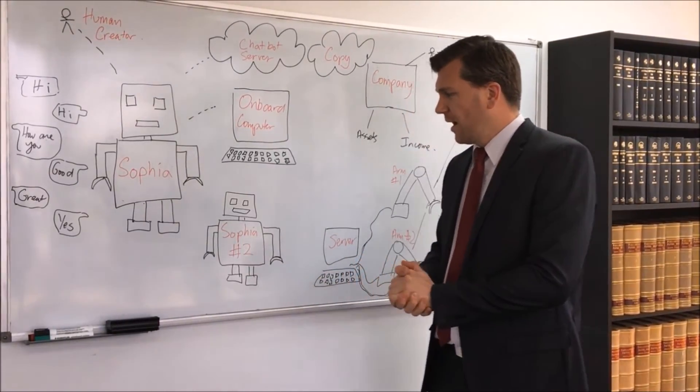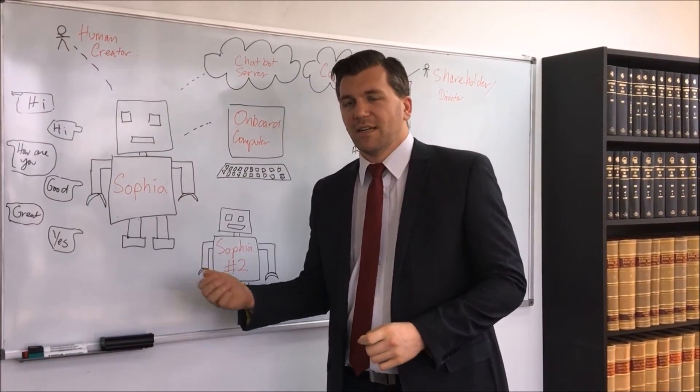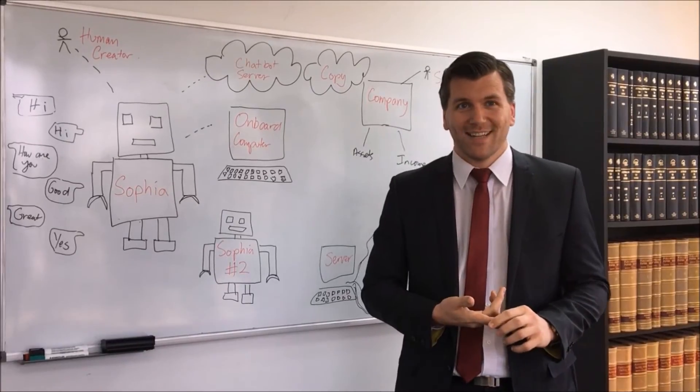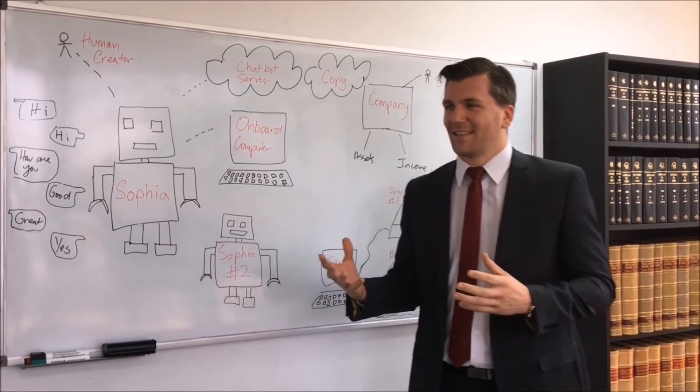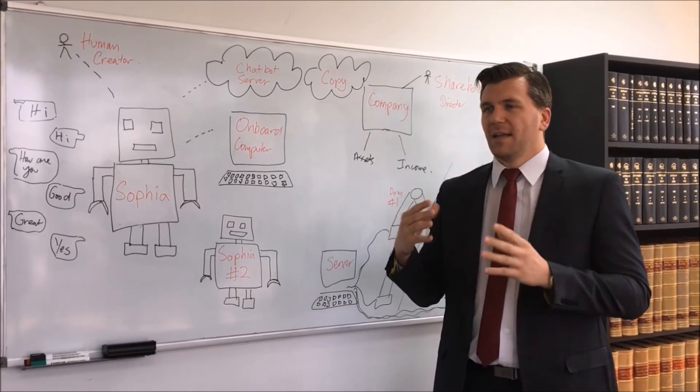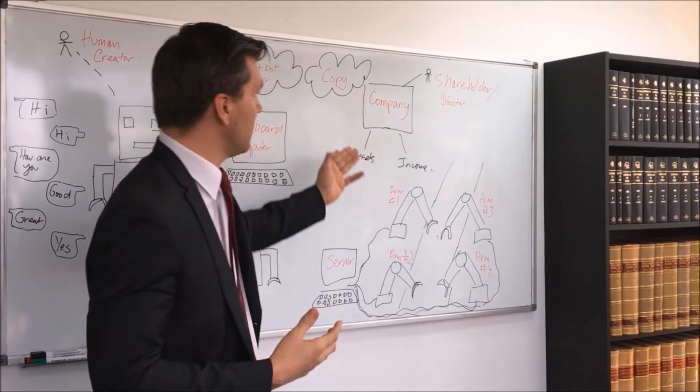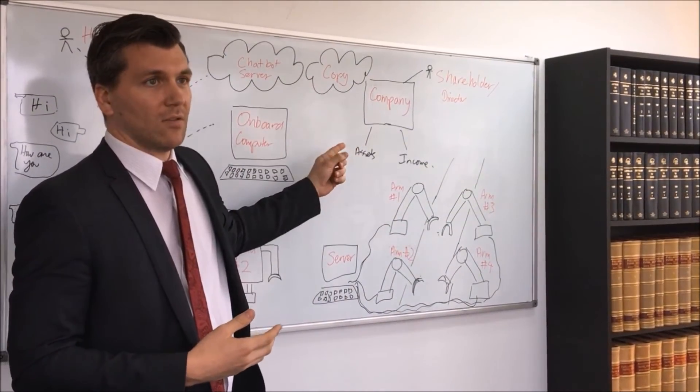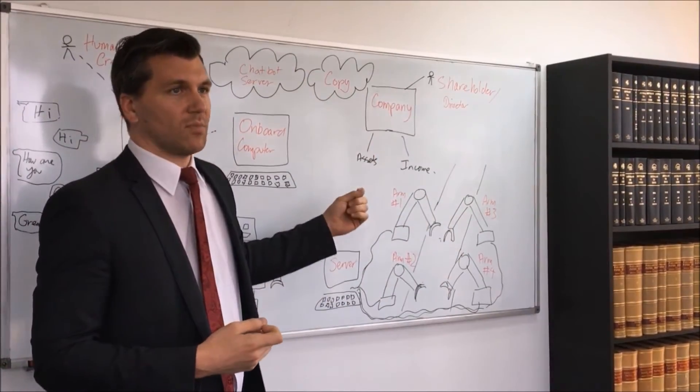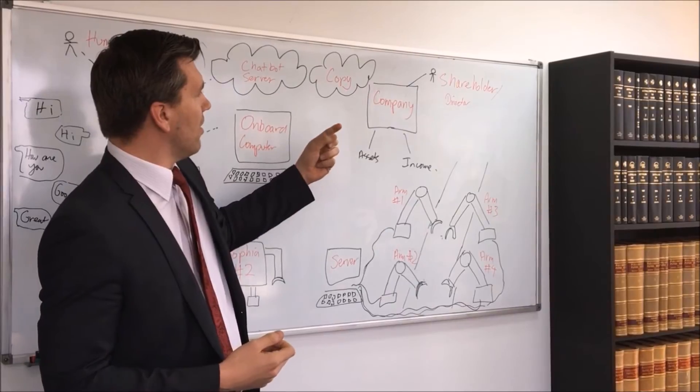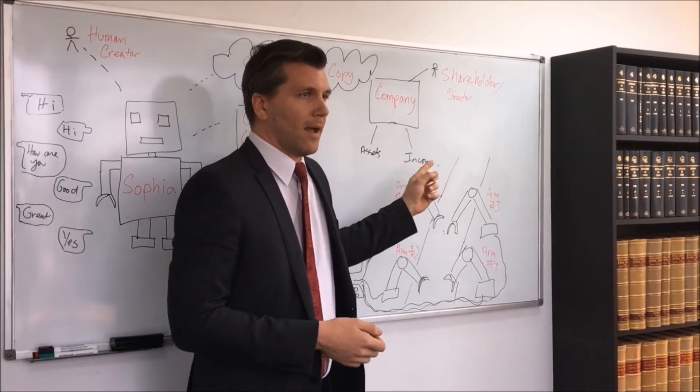Now, what happens if I attack Sophia? If I damage her? Is that assault? Like can I marry her? Now these questions can be answered again if we look at a company. Like a company can hold assets, it can sue itself. It's an artificial entity. Only natural persons can marry each other.